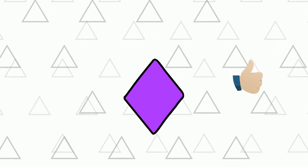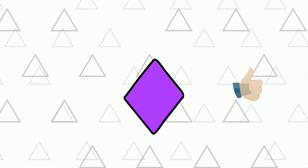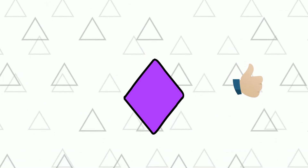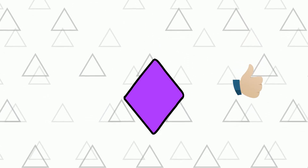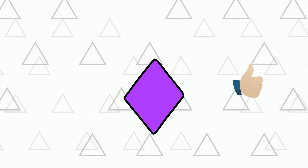A diamond? Yes — because it has sides, vertices, and angles, it's a 2D shape, and it's a closed shape. So it's a yes.